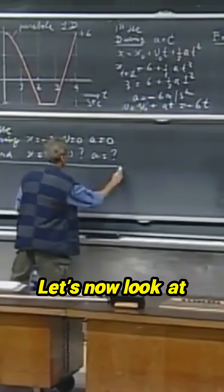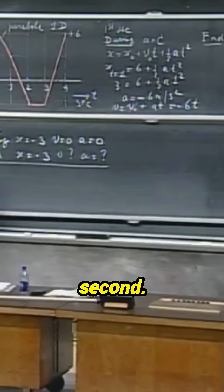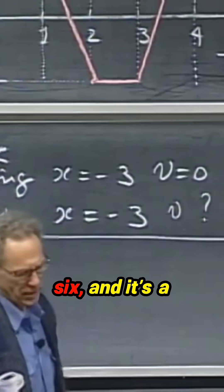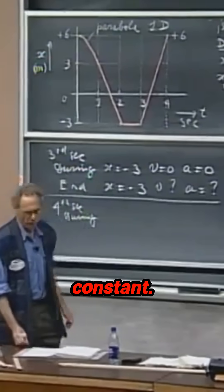Let's now look at the last second, the fourth second. During this time, it's going from minus three to plus six, and it's a straight line, so the velocity is constant.